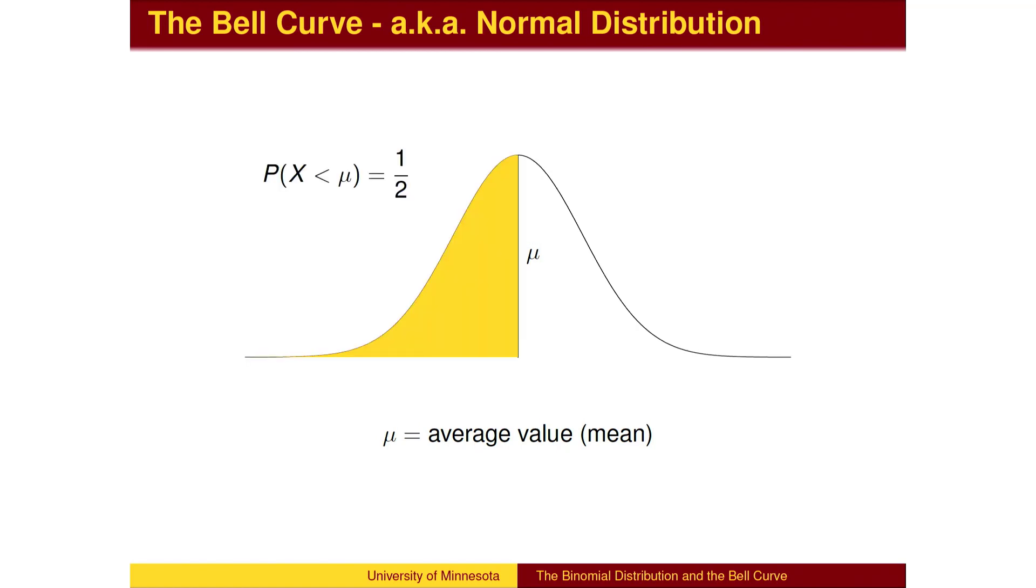We would expect half of the apples to be below average. If x is the weight of a randomly selected apple, the probability that x is below average is one half. Of course, by the symmetry of the bell curve, the probability that x is above average is also a half.